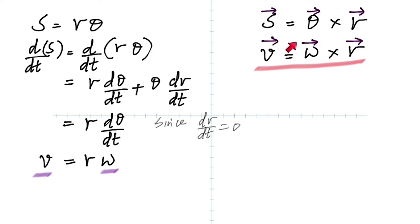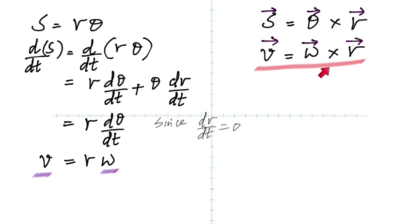Just like S was the cross product of theta and R, linear velocity is the cross product of omega and R. In a cross product, the order matters — so don't put it as R cross omega, because that would be the negative of the velocity. Be careful with the order.